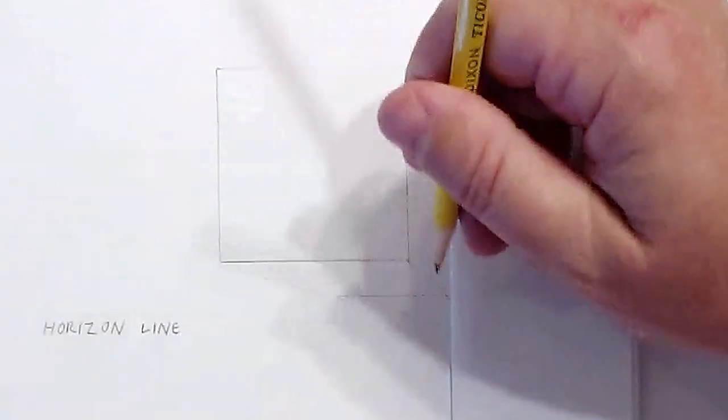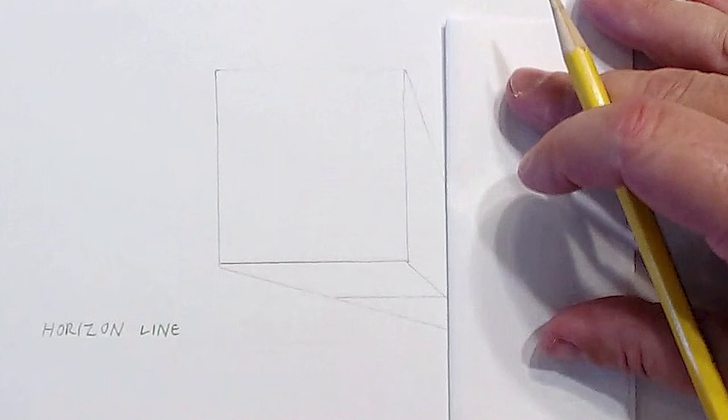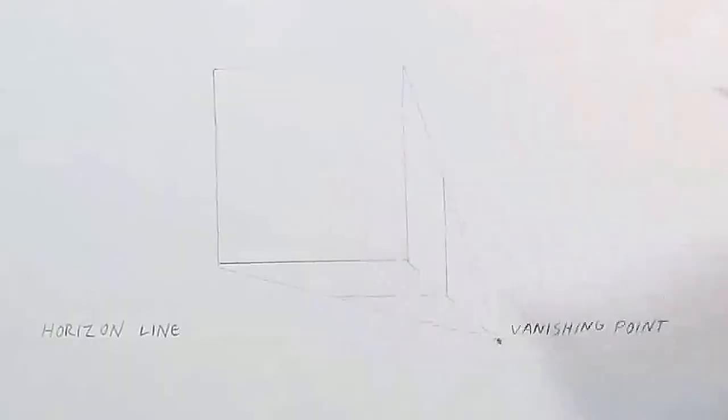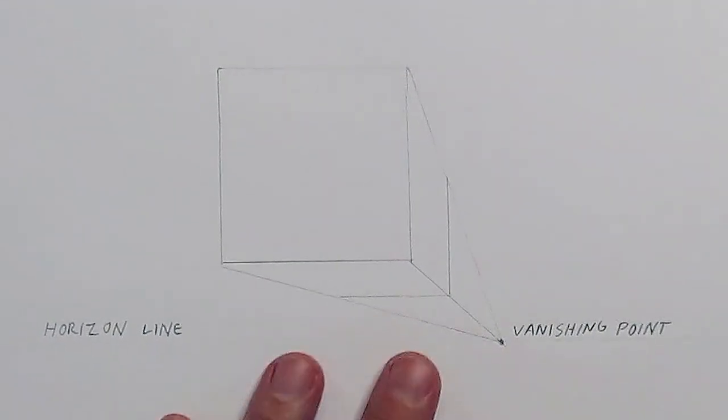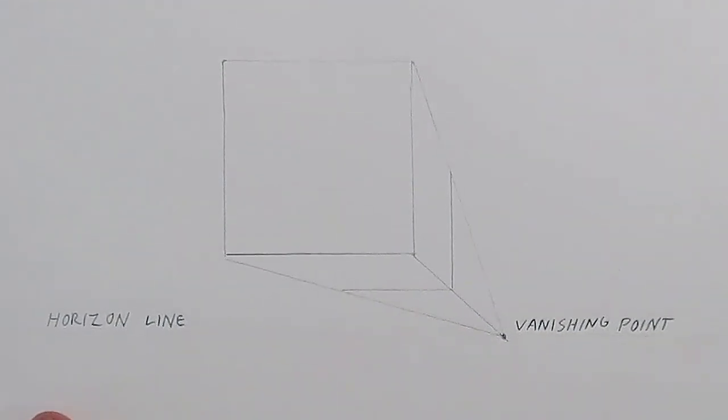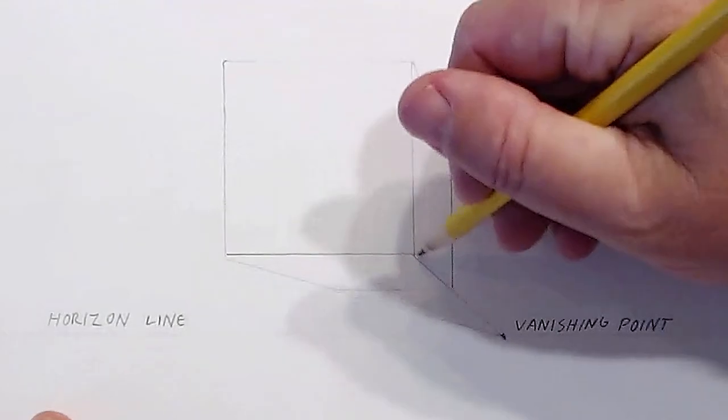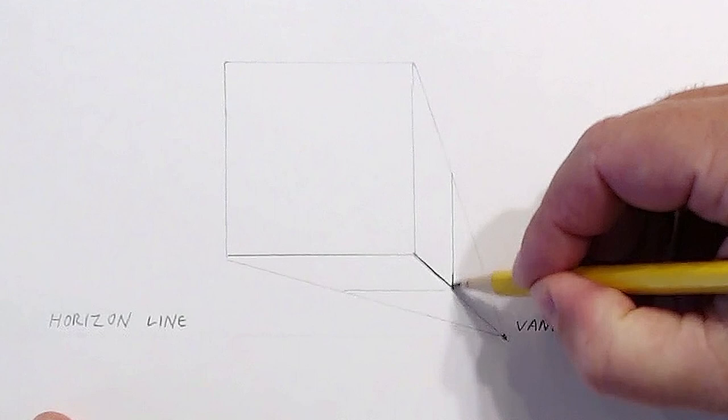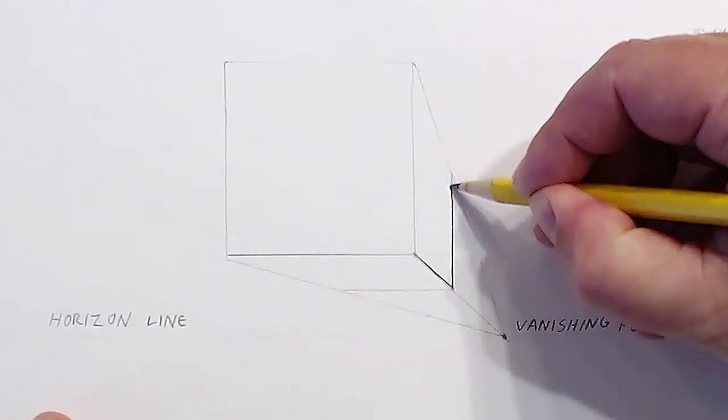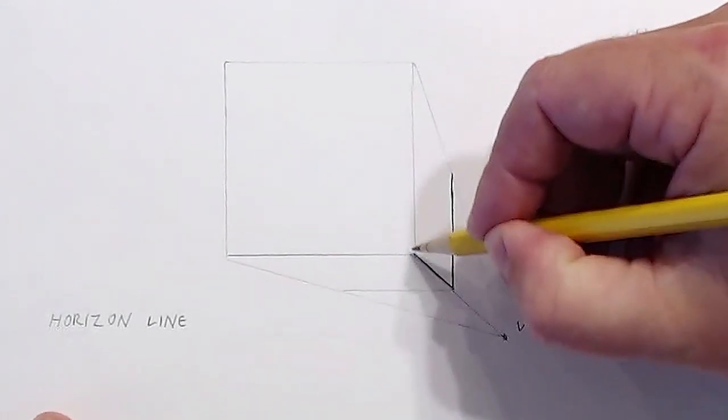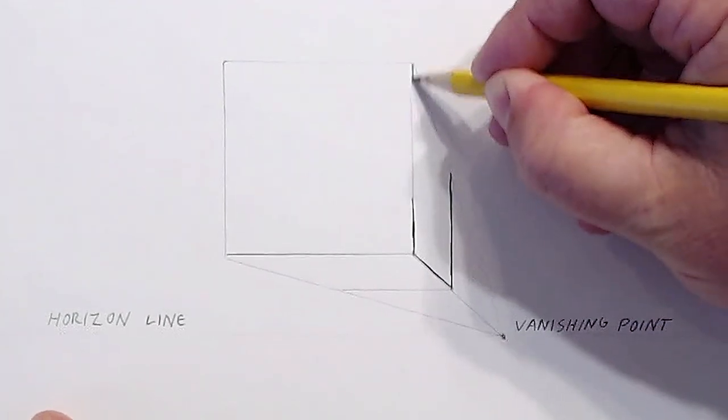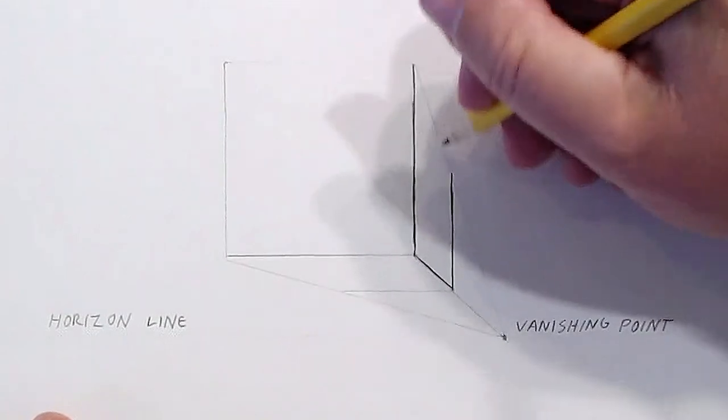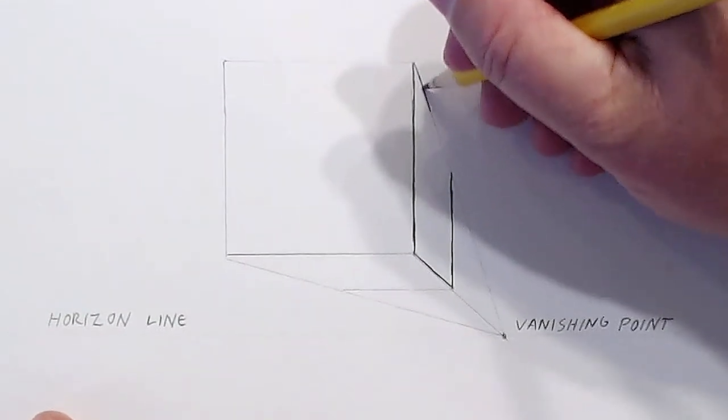Vertical. Those are terms you should learn as well. Up and down, that's vertical. Side to side, that's horizontal. Once you have it like this, your little cube in perspective, I want you to go ahead and darken in the lines that you need. I want you to keep for now those guidelines that you made, because what I want to see is that you made them reasonably light. You want to keep your guidelines really light because you're going to be doing a lot of erasing when you do things in perspective.